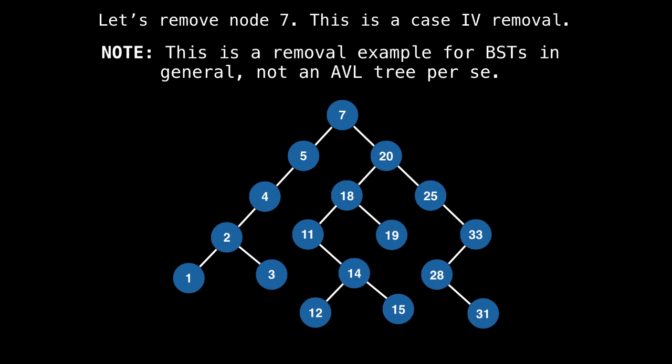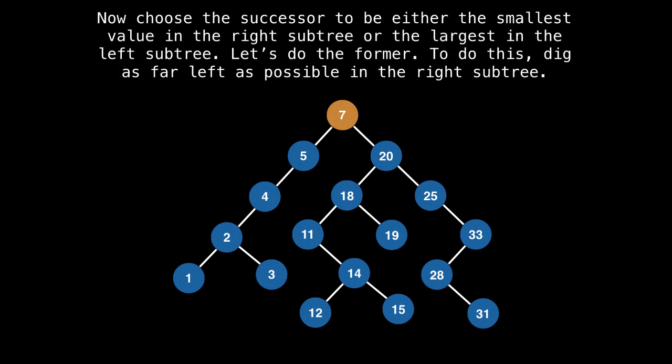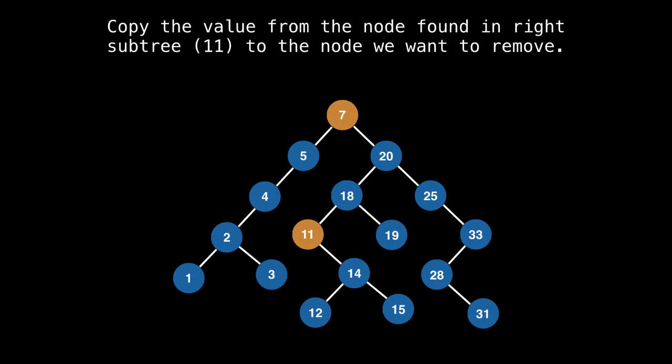Let's see an example because this isn't completely trivial. Let's remove node 7 from this tree, which is the root node. We would start at the root node and discover that in fact, this is the node we want to remove, and notice that it has two non-empty subtrees. So we must choose a successor. To choose a successor, we either pick the smallest value in the right subtree or the largest value in the left subtree. Let's find the smallest value in the right subtree. To do this, you would go to the right once and then dig as far left as possible. Now that we found the successor node 11, we would copy its value into the node we're trying to remove, which is the root node 7.